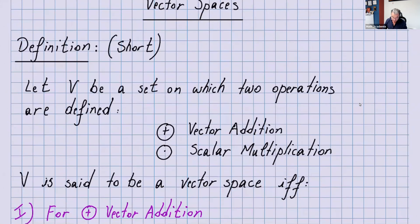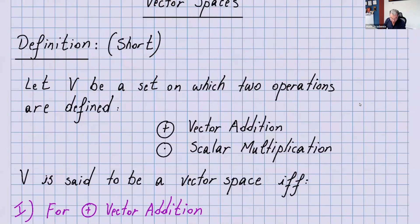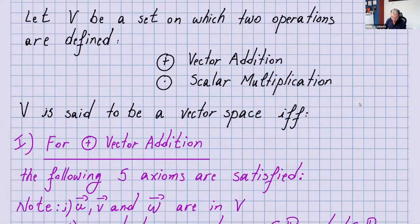So the definition is like a shortcut. You can say: let V be a set on which two operations are defined — vector addition and scalar multiplication. That's the notation I use in this video and the next videos. V is said to be a vector space if and only if the following axioms are satisfied.